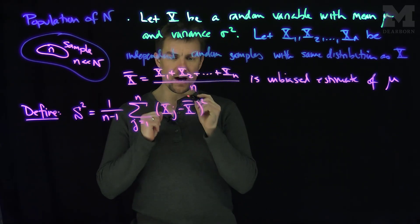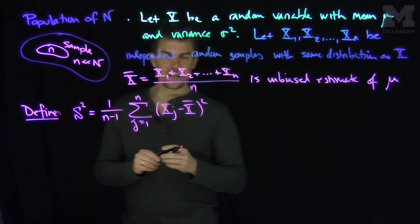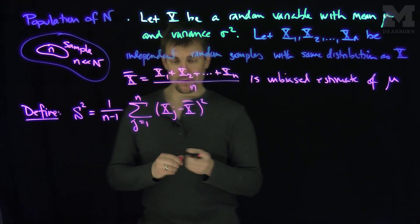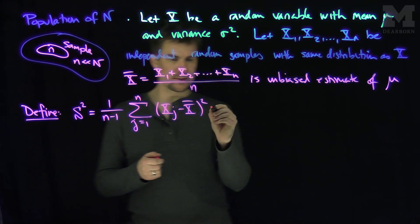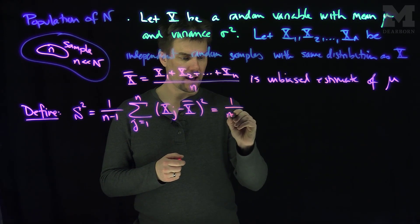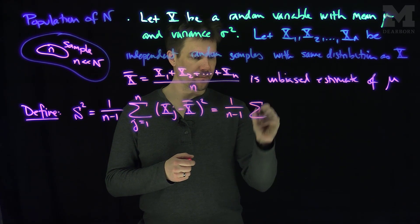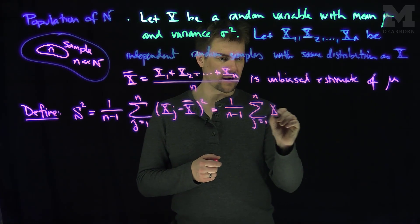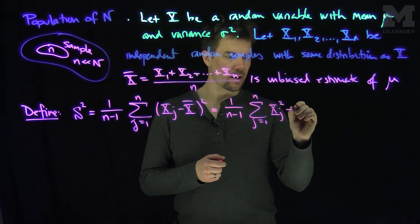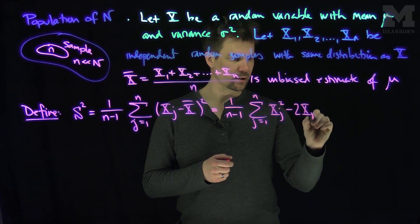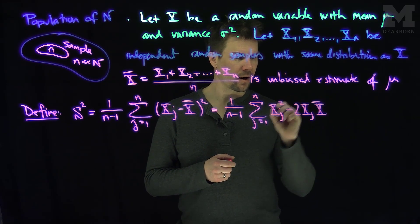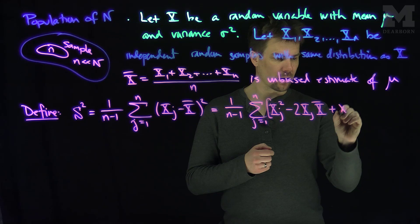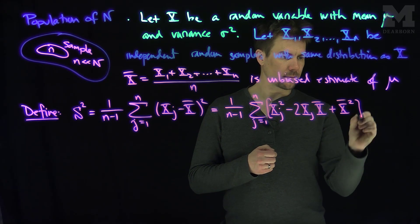Let's compute this. The standard trick is to foil out (xj − x-bar)². We get: S² = 1/(n−1) · Σⱼ [xj² − 2·xj·x-bar + x-bar²].